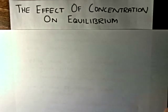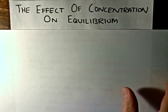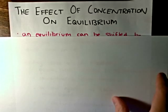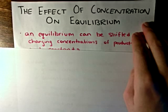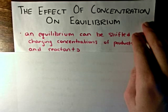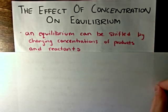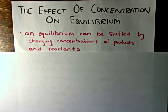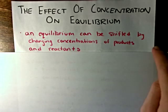In this video, I want to talk about the effect that concentration has on a chemical equilibrium. We know that in a chemical equilibrium, there are both products and reactants. So we can shift an equilibrium by changing the concentrations of the products or reactants, either by adding or removing them.